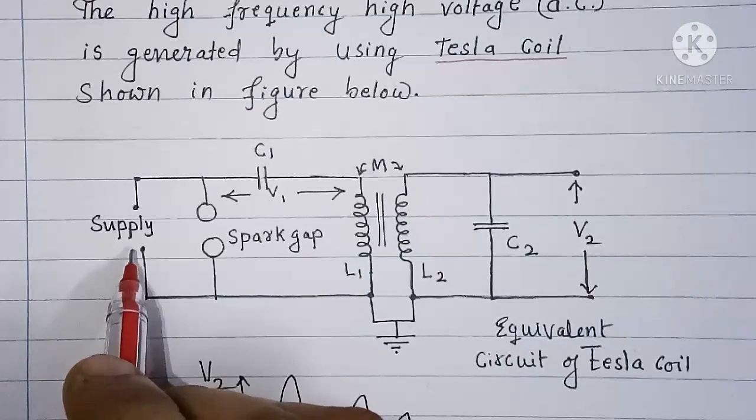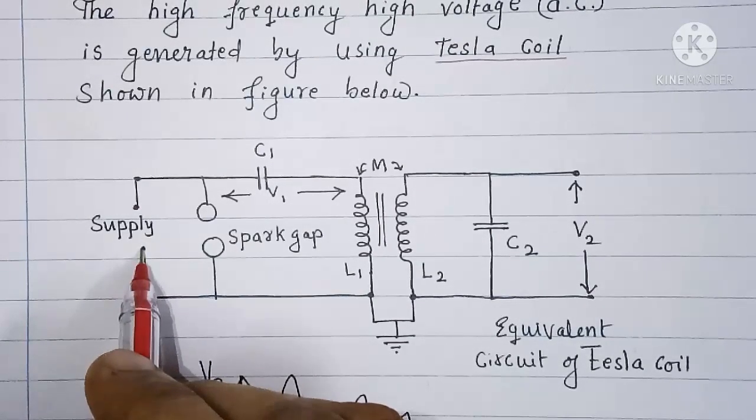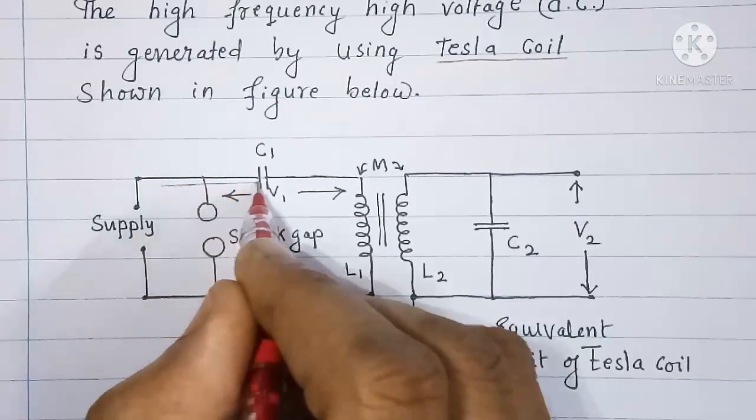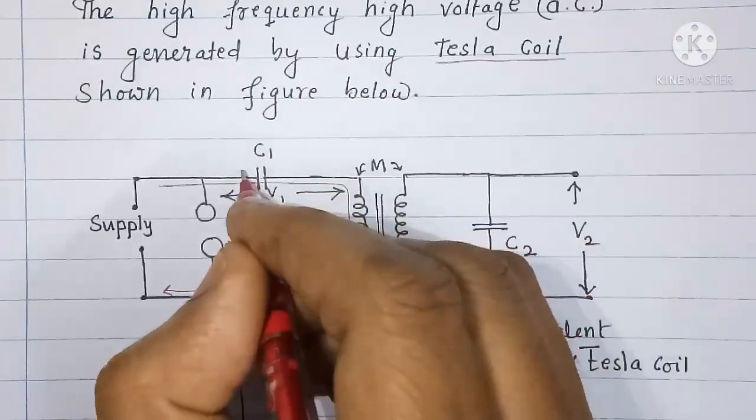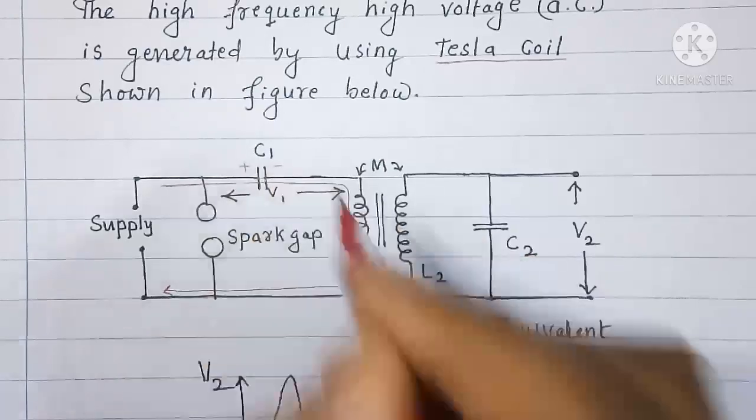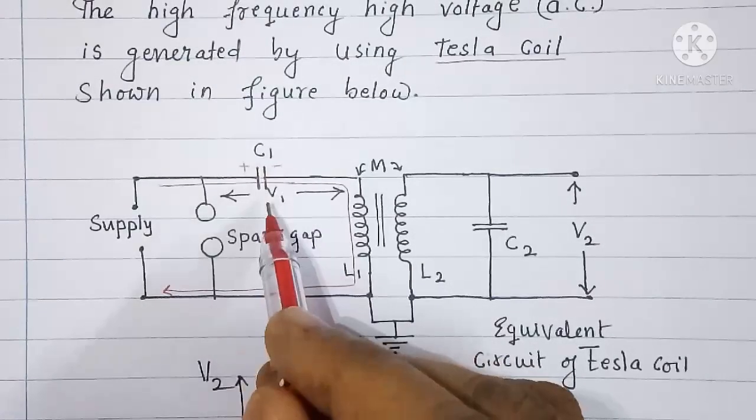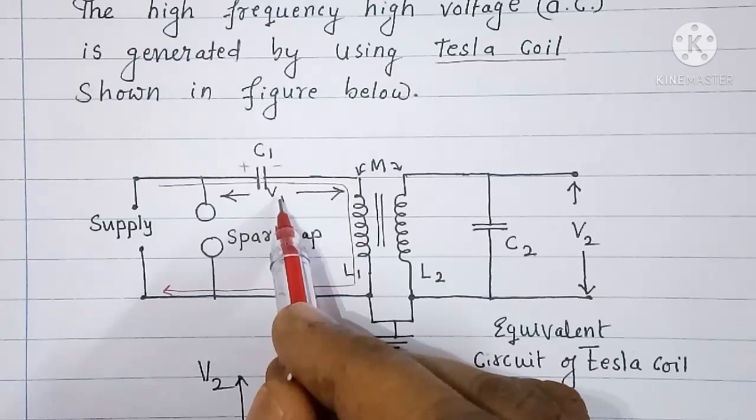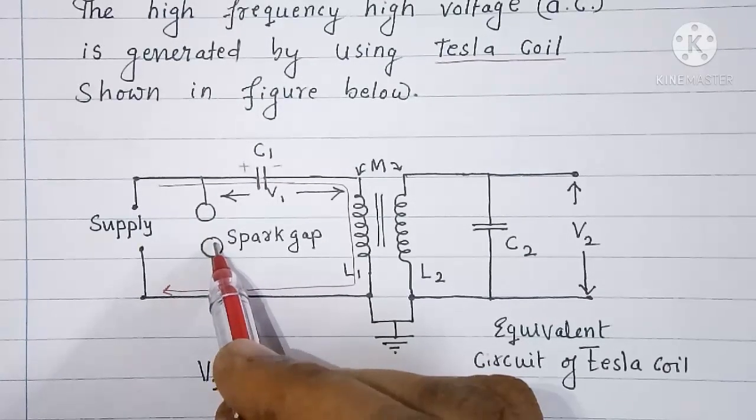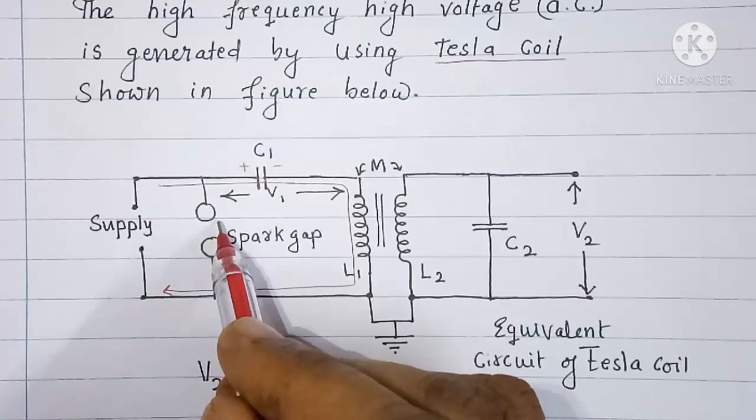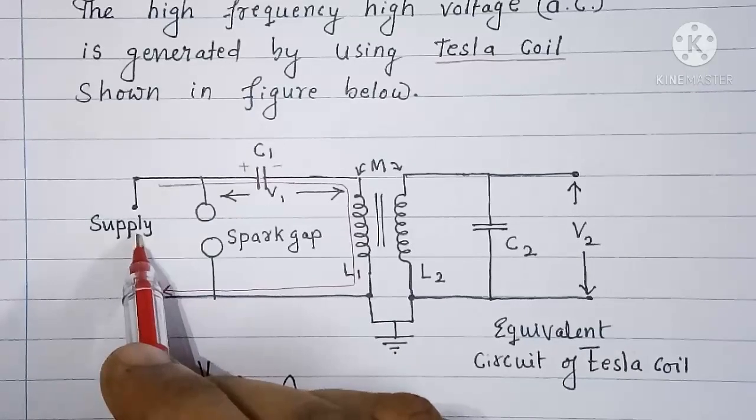If we apply AC or DC voltage as input to this circuit between the terminals shown here, then the current flows through capacitor C1 and the primary winding to charge capacitor C1 with the polarity shown here. When voltage across capacitor C1 becomes equal to V1, then for the adjusted gap between the two spheres here, the medium between the spheres gets ionized and starts to conduct. At that time the input AC supply must be disconnected.